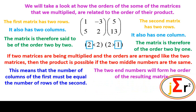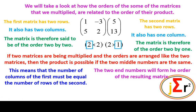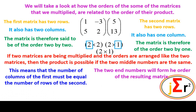The two end numbers will form the order of the resulting matrix. When we multiply these two matrices, the order of the answer will be 2x1, determined by the two extreme numbers. The two inside numbers tell us if the matrix product is possible — it is only possible if they are equal. The two end numbers tell us the order of the resulting matrix, which is therefore 2x1.